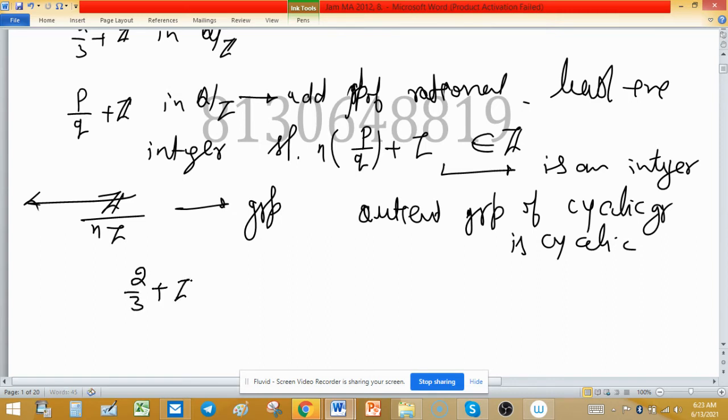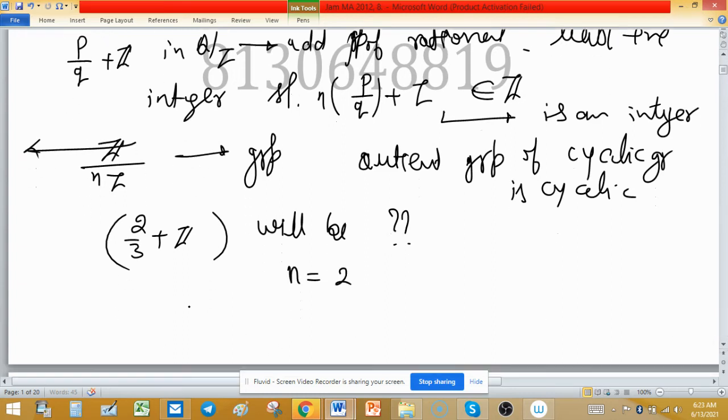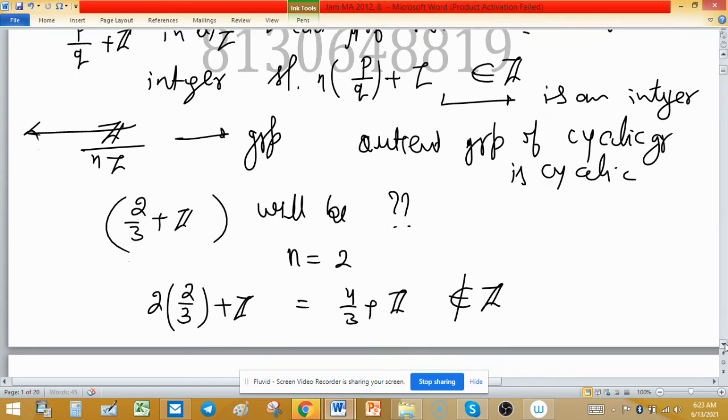Order of 2/3 + Z will be - we need to find it. So put n equal to 2. So what we have: 2/3 times 2 + Z equals 4/3 + Z, which does not belong to Z. So 2 is not the order.